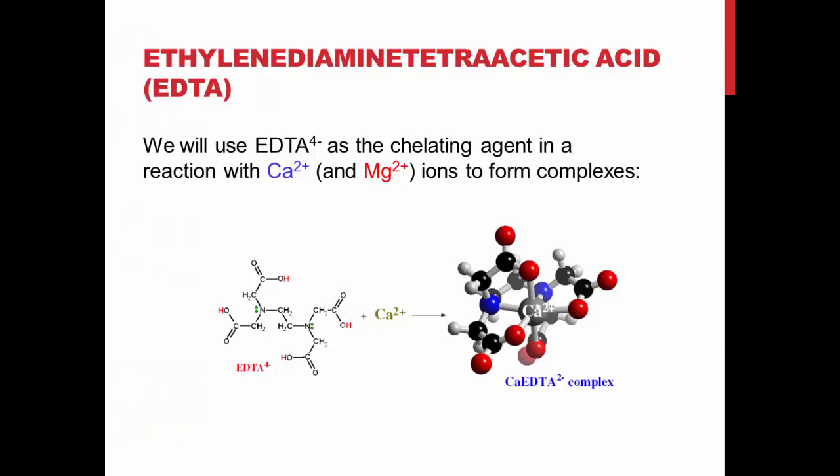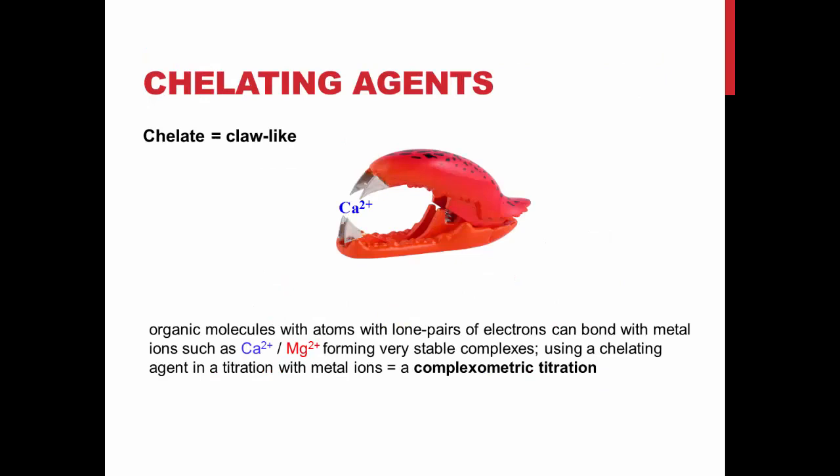In this experiment, we will be using EDTA, ethylenediamine tetraacetic acid. EDTA is a classic example of a chelating agent. It forms a complex with calcium and magnesium. When chelating agents are used in a titration, it is called a complexometric titration.